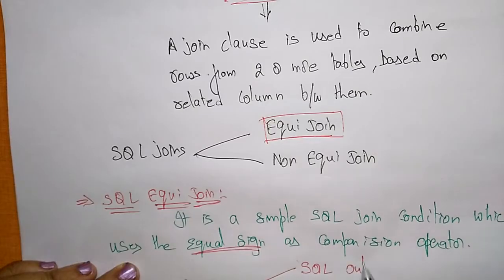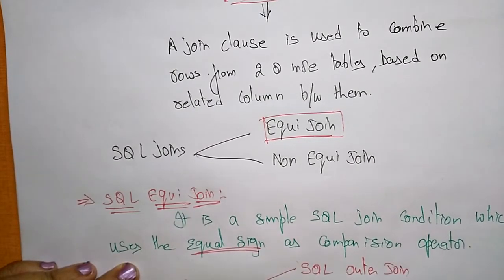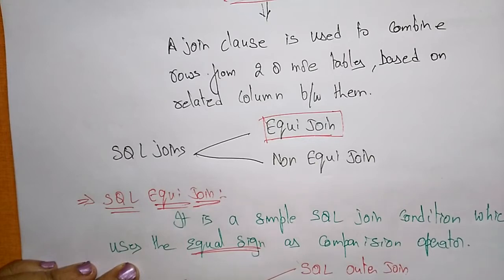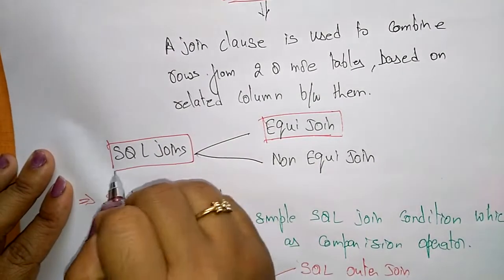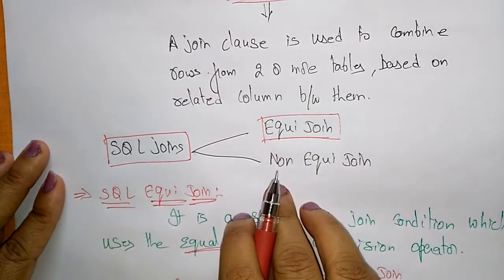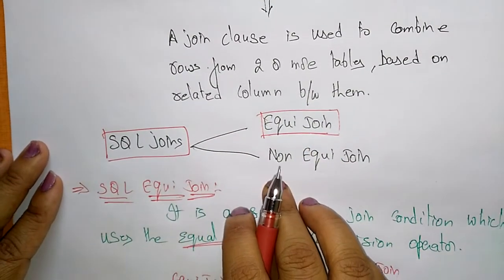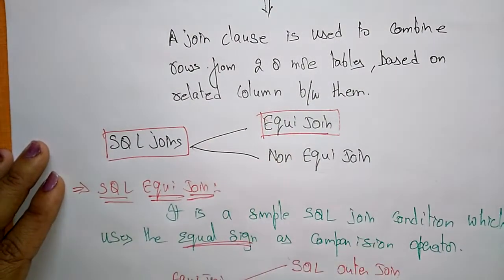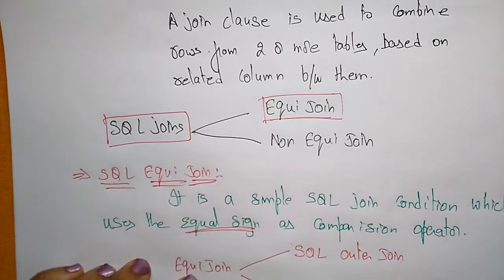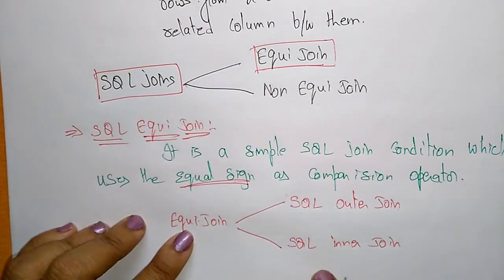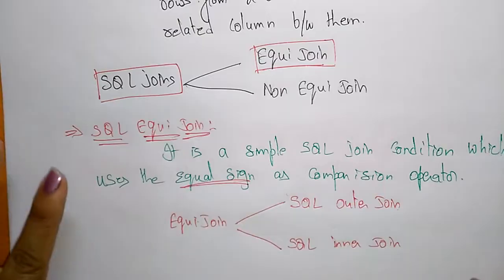The equi join is further divided into two types: SQL outer join and SQL inner join. Don't be confused — SQL joins are classified into equi join and non-equi join, and equi join is again divided into SQL outer join and SQL inner join.